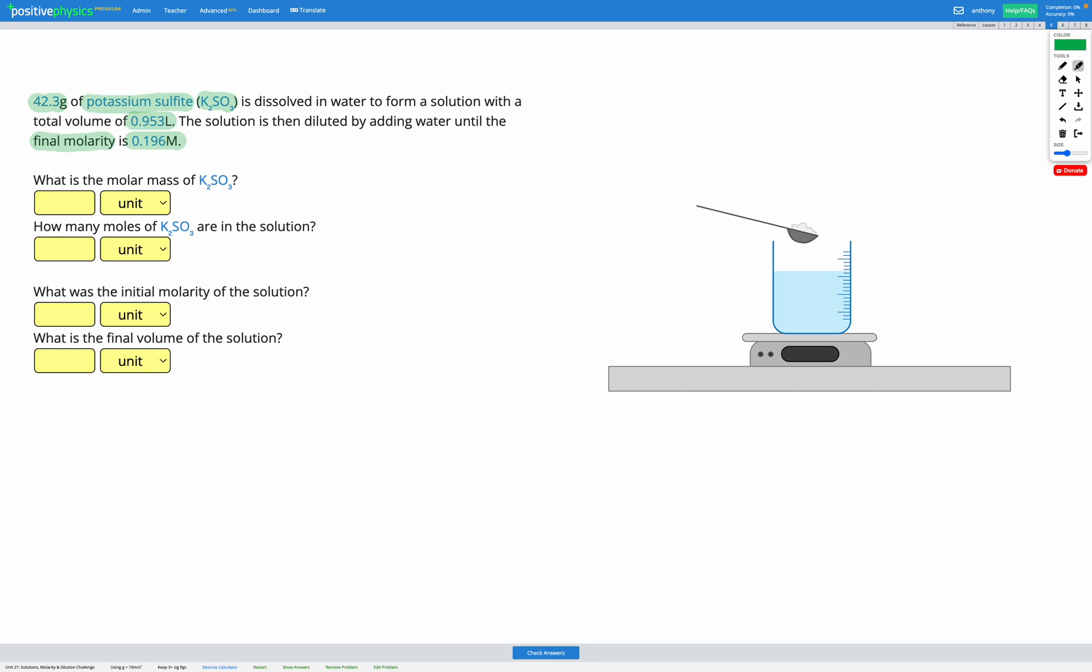Our goals are to figure out the molar mass of potassium sulfite, how many moles of K2SO3 are in the solution, the initial molarity of the solution, and the final volume of the solution. Let's start by finding the molar mass of potassium sulfite, K2SO3.